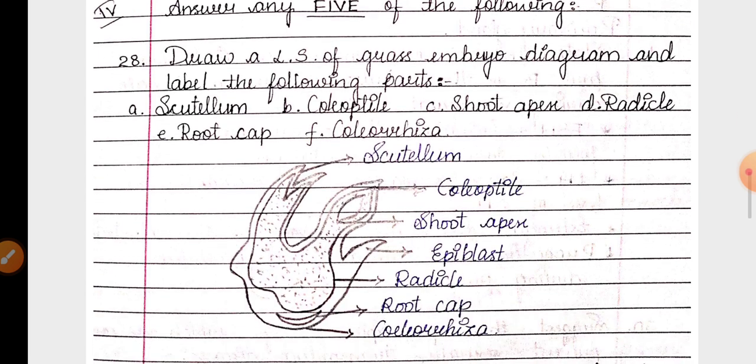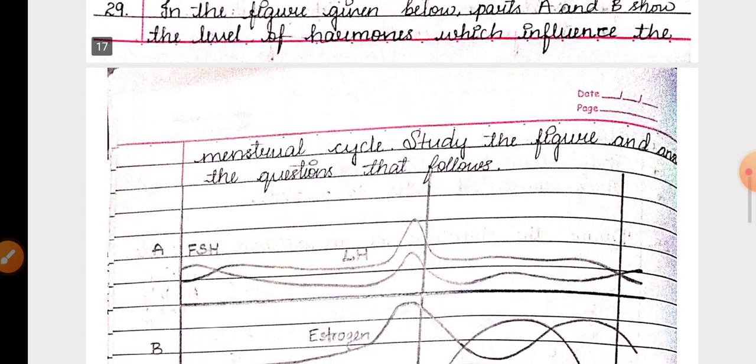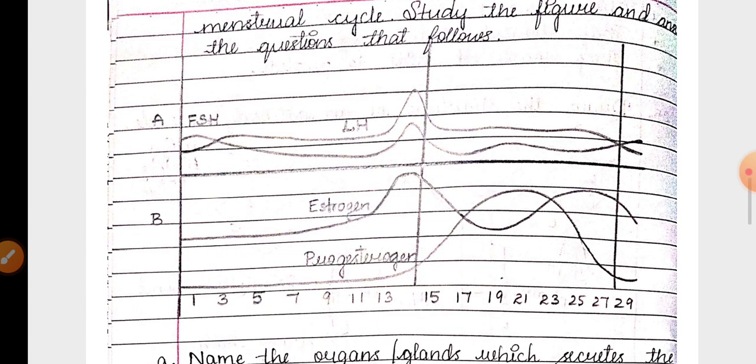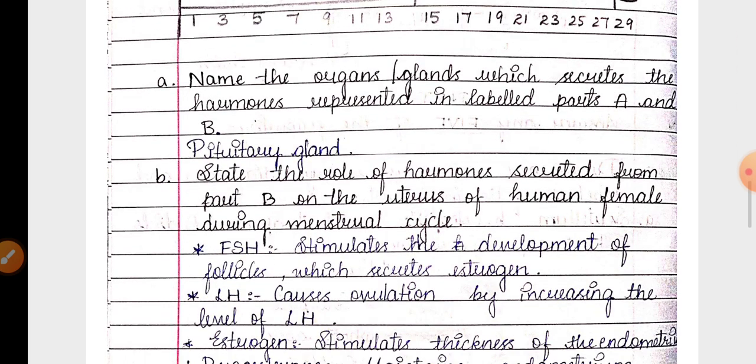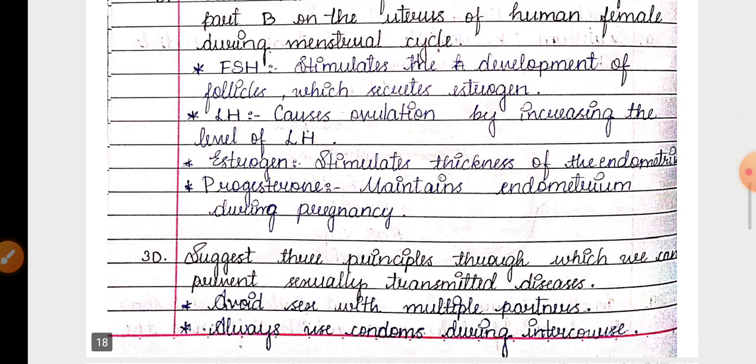Then 28th question for three marks, LS of grass embryo monocot embryo. Then 29th question, graph of menstrual cycle has been given. Related to some two questions are there, answer has been written.